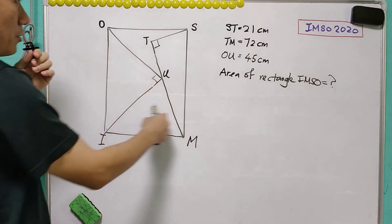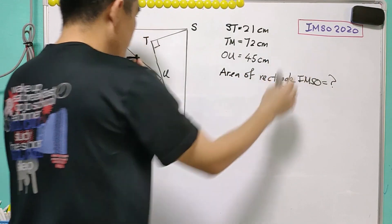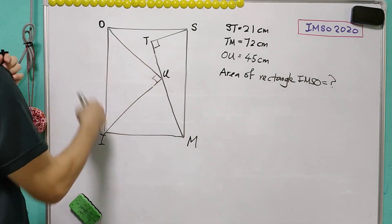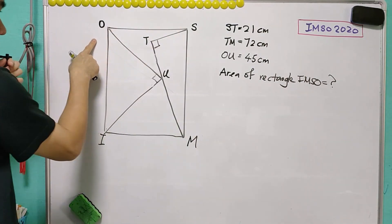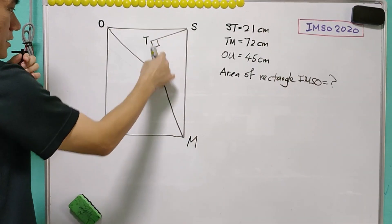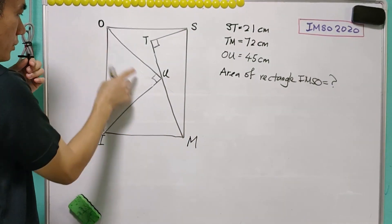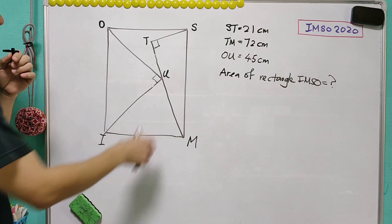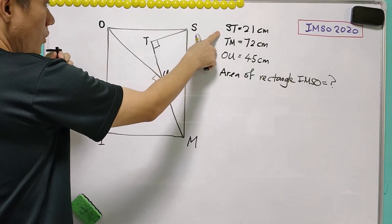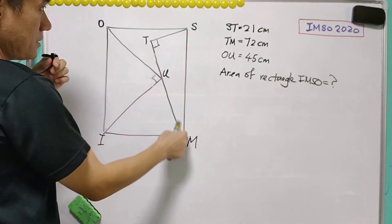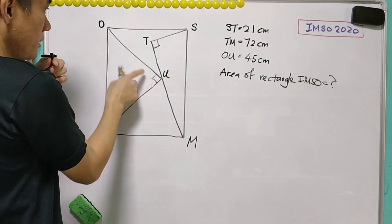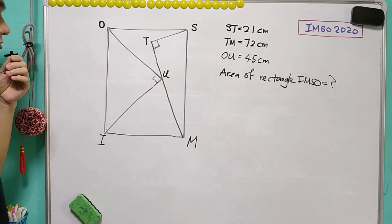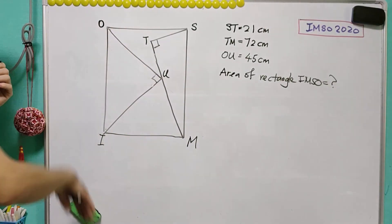This is a geometric question from IMSO 2020. Given that IMSO is a rectangle, STM and OUI are both right angle triangles, where ST is 21 cm, TM is 72 cm, and OU is 45 cm. You are asked to find the area of IMSO.